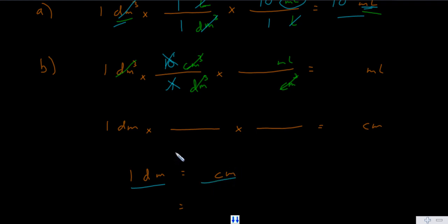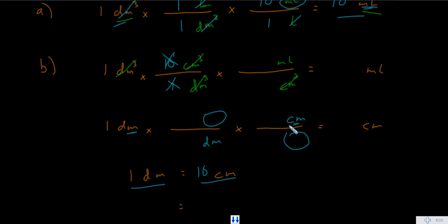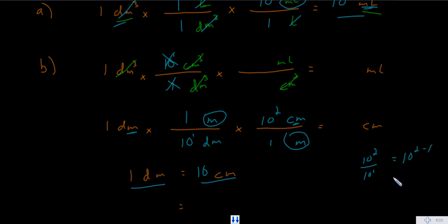You should already know there are 10 centimeters per decimeter. If not, you can convert from decimeters into a rest-stop unit and then into centimeters. That unit is the base unit: meters. Convert from decimeters into meters — there are 10¹ decimeters per one meter — and then how many centimeters per one meter? 10². So the number of centimeters per one decimeter is 10² over 10¹, or 10¹, meaning there are 10 centimeters per one decimeter.